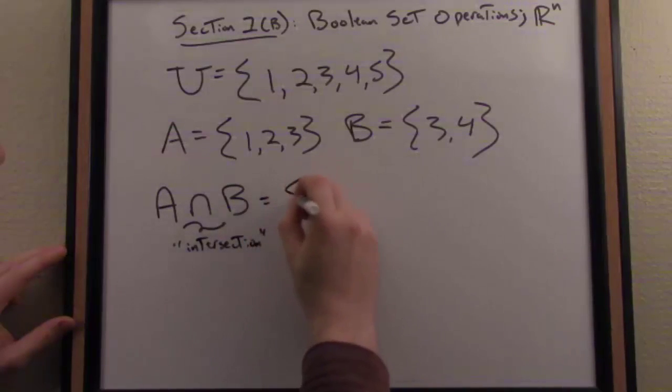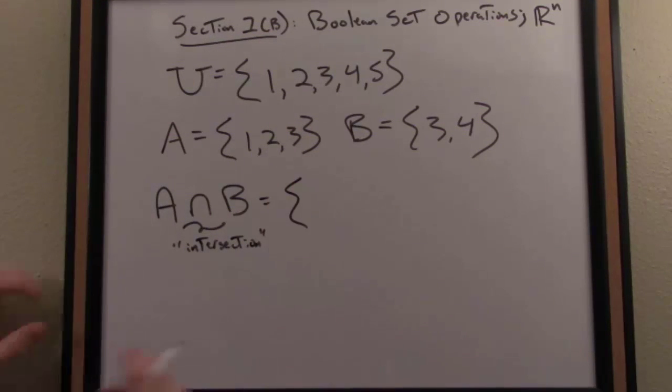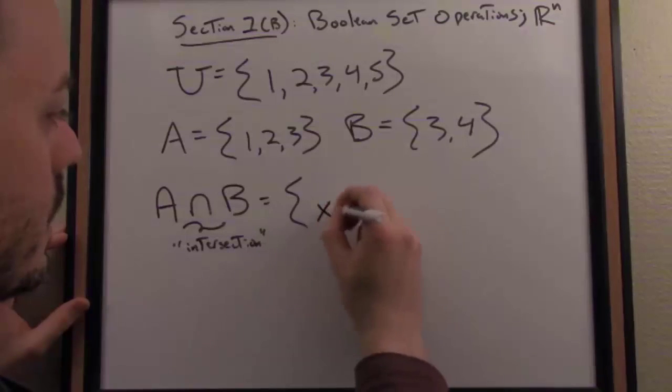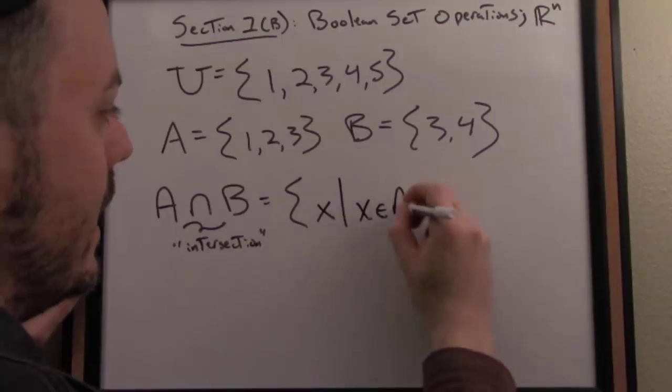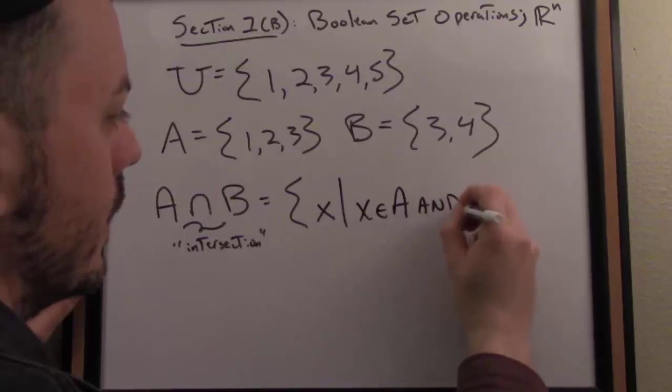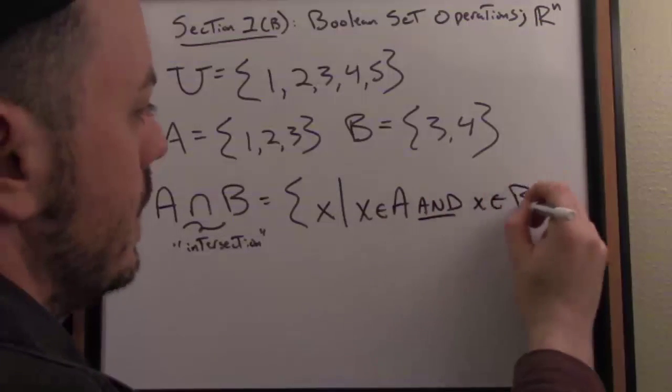And the definition, in a set builder sense, of the intersection of A and B is basically just the set of all elements common to both sets. So I would read this as follows: the set of all X such that X is in A and, now is our connective, X is in B.